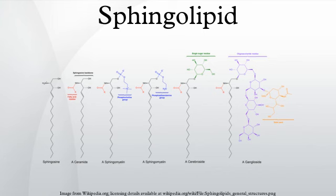Mammalian sphingolipid metabolism: de novo sphingolipid synthesis begins with formation of 3-keto-dihydrosphingosine by serine palmitoyltransferase. The preferred substrates for this reaction are palmitoyl-CoA and serine. However, studies have demonstrated that serine palmitoyltransferase has some activity toward other species of fatty acyl-CoA and alternative amino acids, and the diversity of sphingoid bases has recently been reviewed. Next, 3-keto-dihydrosphingosine is reduced to form dihydrosphingosine, which is then acylated by a ceramide synthase, such as LAS1P or LAS2P, to form dihydroceramide. This is desaturated to form ceramide.